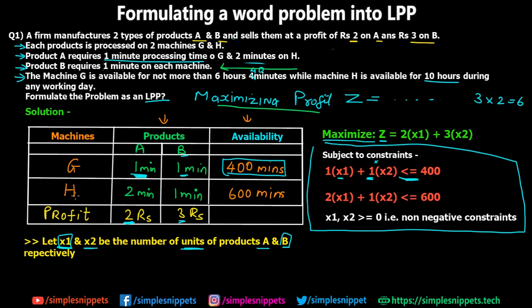The second constraint is for machine H: 2·x1 + 1·x2 ≤ 600. Time taken by product A on machine H is 2 minutes per unit, and by product B is 1 minute per unit, and the total must be less than or equal to 600 minutes. Additionally, x1 ≥ 0 and x2 ≥ 0, which are the non-negativity constraints, because you cannot produce a negative number of products.